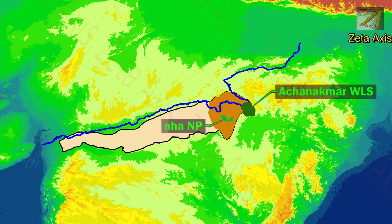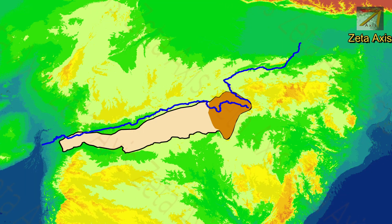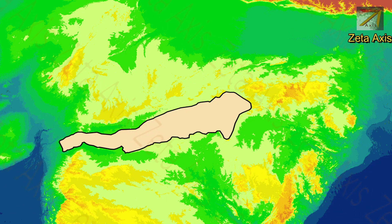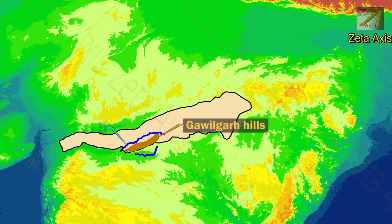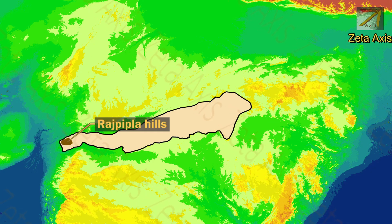Kanha National Park is also located in the Maikal range. Maikal range is also rich in bauxite, which is a mineral of aluminium. The Mahanadi river and its tributaries drain the eastern side of Maikal range. The next sub-range of Satpura hills is Gawilgarh range, which is part of Satpura range in between the Tapti and Purna rivers. The next smaller sub-range is Rajpipla hills, which are the westernmost part of Satpura hills, where Satpura hills meet the Western Ghats.